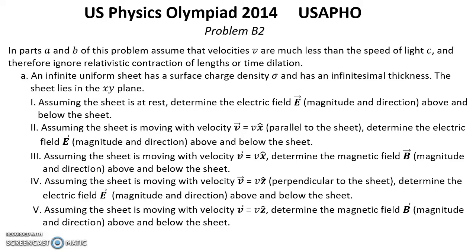Question 1: Assuming the sheet is at rest, determine the electric field E magnitude and direction above and below the sheet. Question 2: Assuming the sheet is moving with velocity V in the X direction parallel to the sheet, determine the electric field E magnitude and direction above and below the sheet.